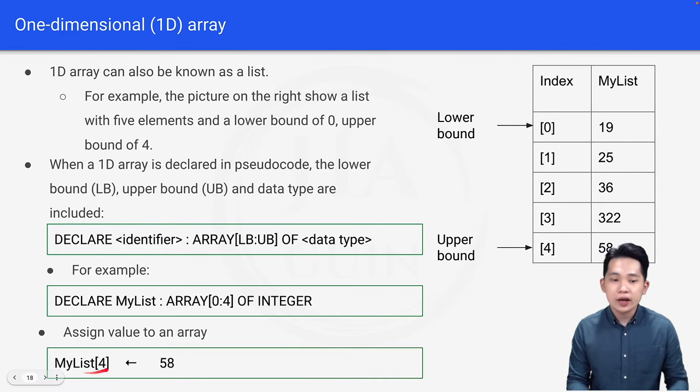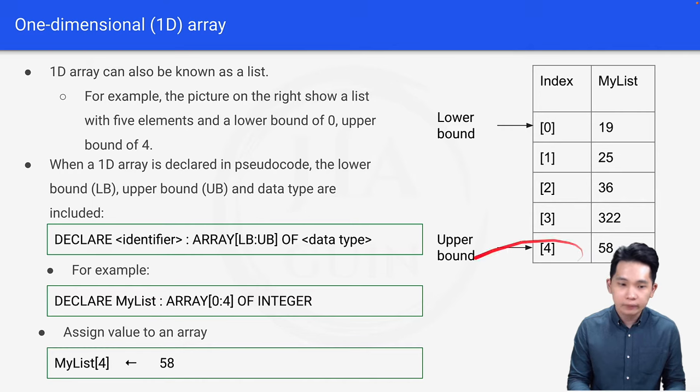And then we put the index. MyList is the name of the array, and 4 is the index. So we will be pointing to this last element here. This arrow is the assignment symbol, and this is the 58 which is the number here. Therefore, this is how we can assign a value to an element inside the array.